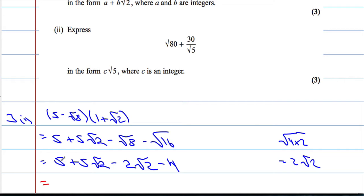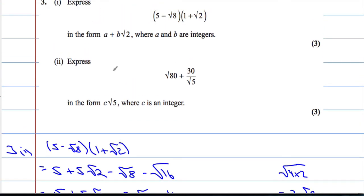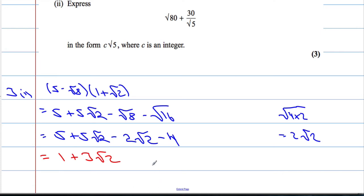Okay, let's tidy everything up. So 5 take away 4 is 1, 5√2 take away 2√2 is +3√2. So we have written it in the form a + b√2, and a and b are positive or negative whole numbers, so we're good to go.